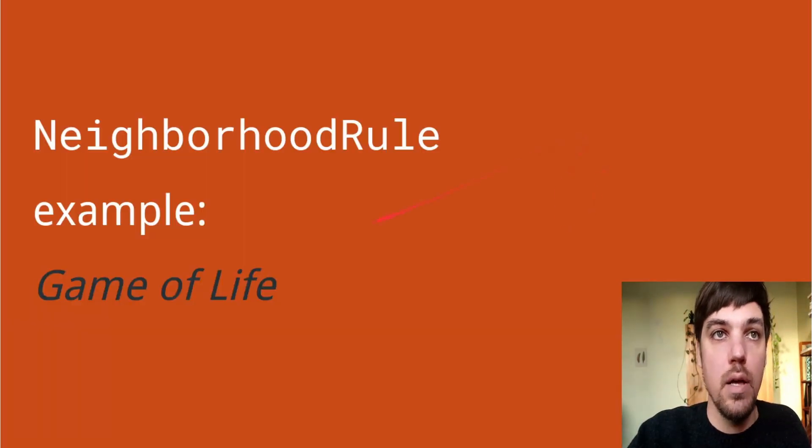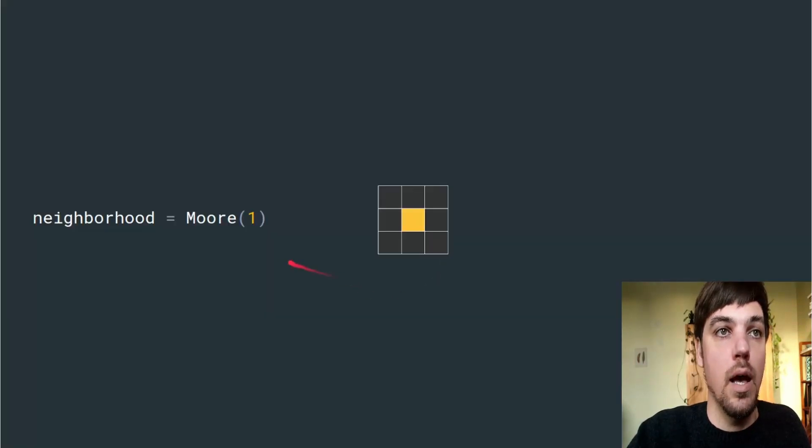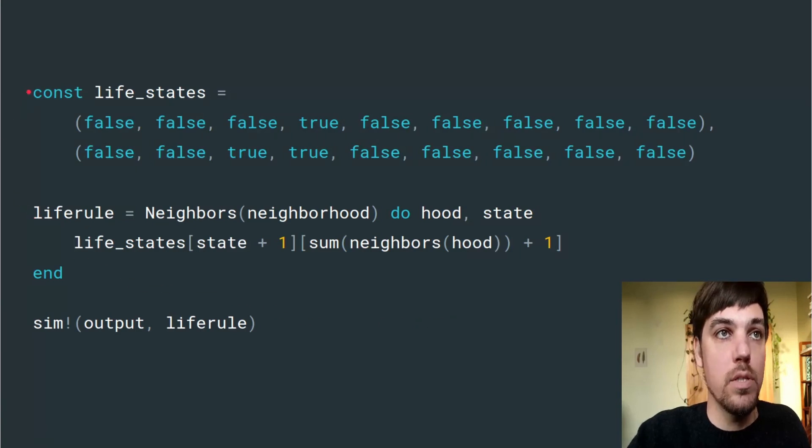As an example, we'll use a game of life rule, which has a Moore neighborhood of radius one. Once we define the state changes for the rule, actually defining the rule is a one liner, just summing the neighborhoods.